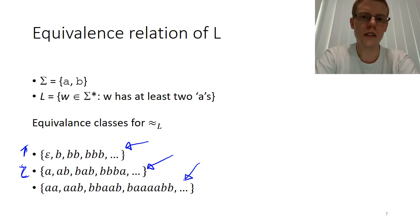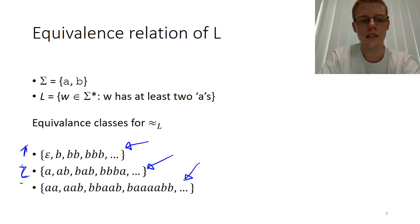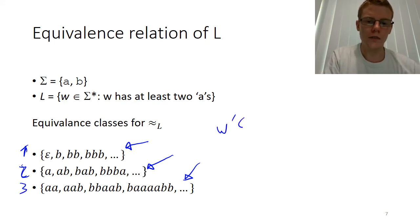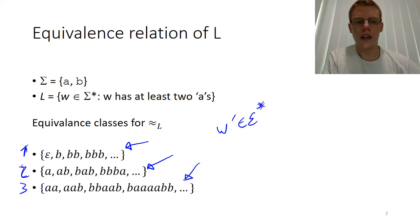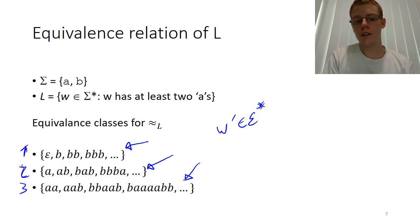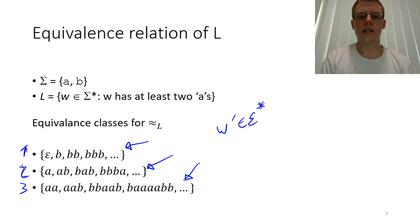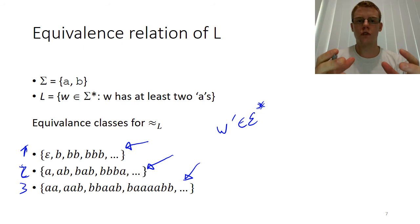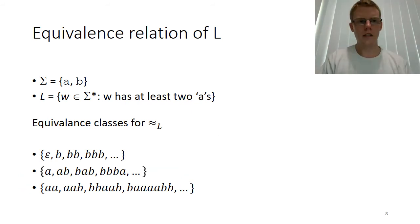These are the only three equivalence classes — every string made of A's and B's fits into one of them. If I tack a string W onto the end of any pair of strings from the first equivalence class, the result is the same: if W has two A's it's in L; if W has one or no A's it's not. But the result would be different for each of the other two equivalence classes. Each equivalence class corresponds to one state we need in the machine — let's build that machine.